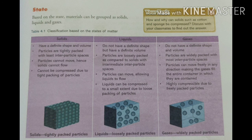Solids have definite shape and volume — both are fixed. Liquids have no fixed shape but have a fixed volume. For example, a glass of water poured into a pan stays the same volume but changes shape. Gases have neither definite shape nor definite volume.